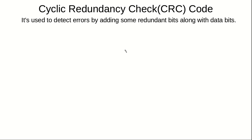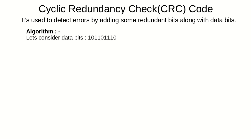Hello everyone. In this video I would like to talk about Cyclic Redundancy Check (CRC) code. It is used to detect errors in data communication by adding some redundant bits at the end of the data. Let's try to see what the algorithm behind this is. Let's consider this data, so we have a couple of data bits.